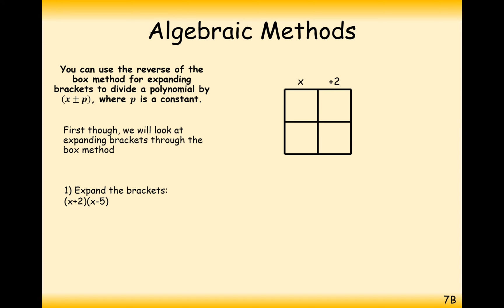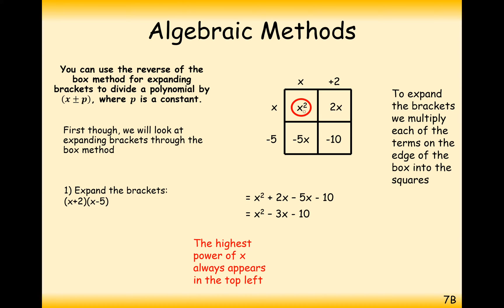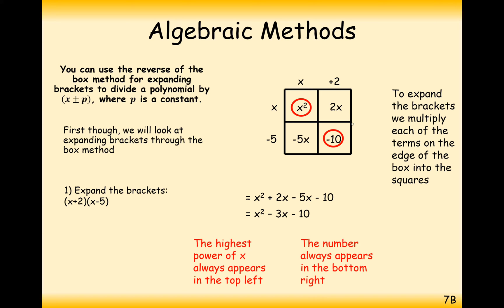The box method works by putting the two brackets side by side on a box, then we multiply the values outside of the boxes to get the values inside the boxes, and then we simplify afterwards. Notice that the x squared term — the highest power of x — always appears in the top left-hand cell. The constant at the end of the polynomial is always going to be in the bottom right-hand cell. This is true whether we're expanding a quadratic or a cubic — the bottom right cell is always the constant, the top left is always the highest power.